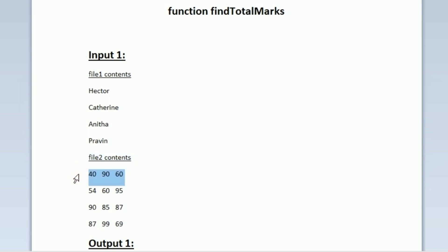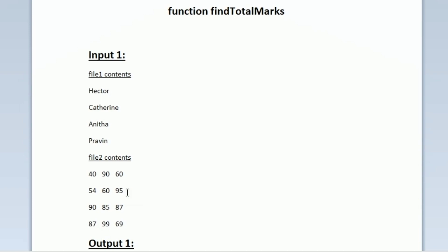In file 2, the first line contains three integers: 40, 90, and 60 — these are the marks obtained by Hector. Similarly, the next line contains three integers representing the marks obtained by Catherine. So file 1 contains student names and file 2 contains their marks.